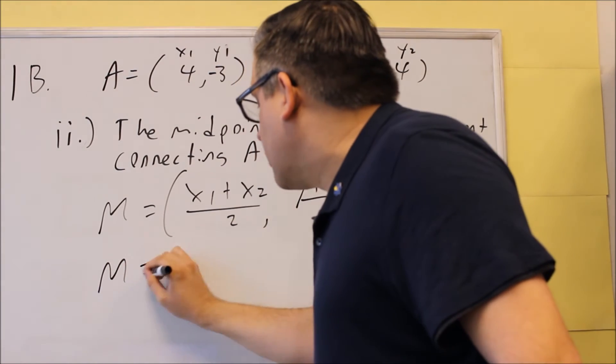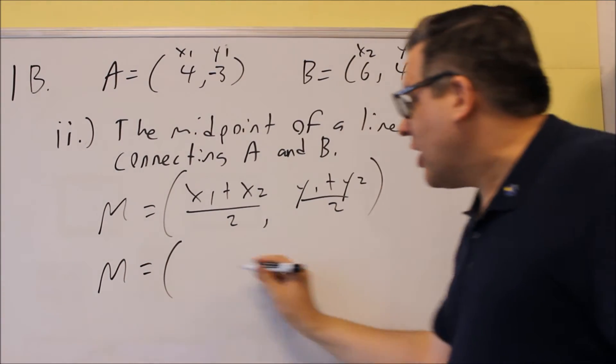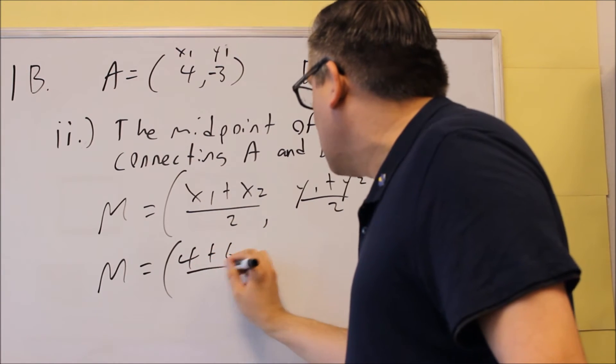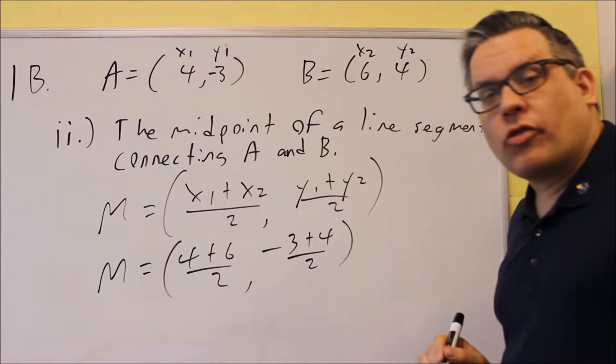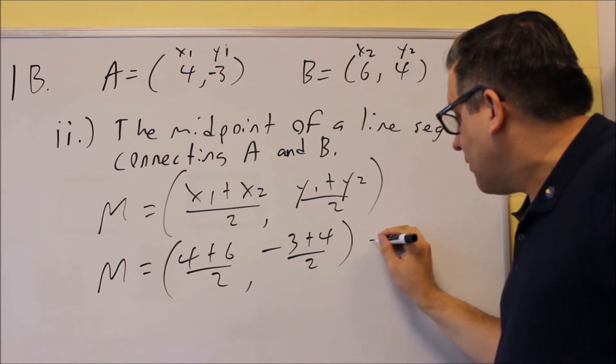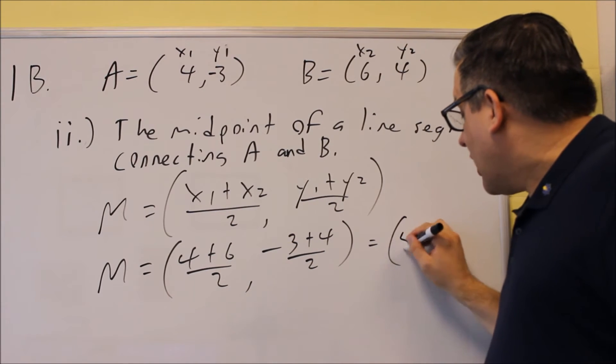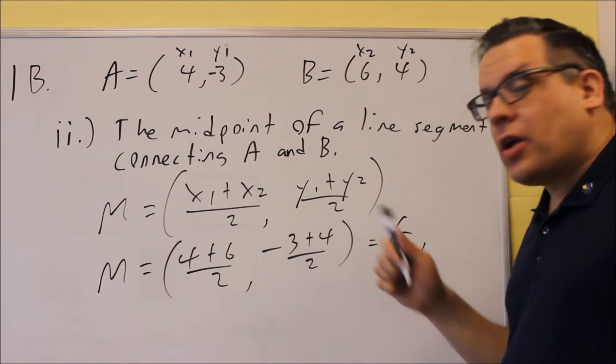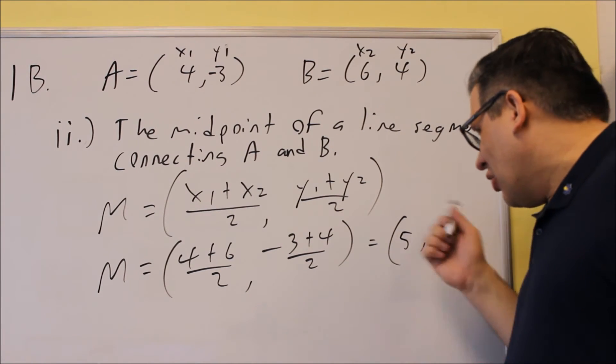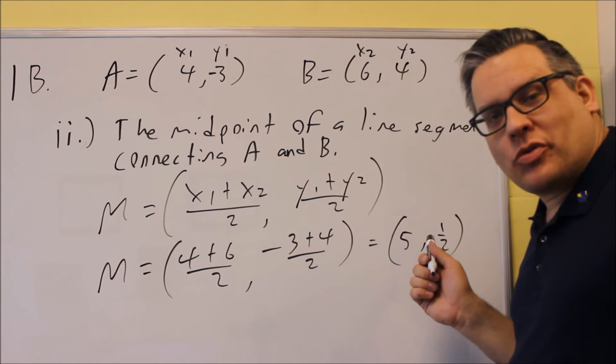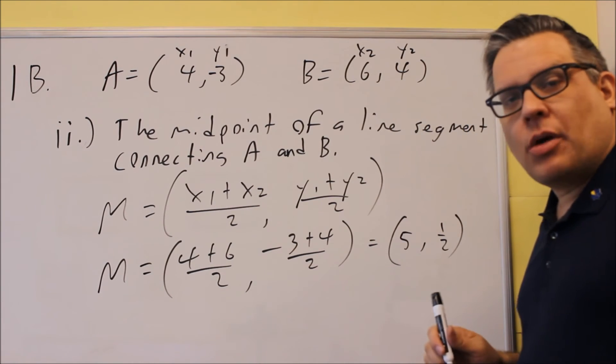And you get a coordinate for our answer. So for the first one, we're going to go ahead and put in the two x values. So we have 4 plus 6 over 2, and negative 3 plus 4 over 2. And we're going to simplify. So we get a 10 over 2, which is 5, and 4 minus 3 is 1, so we get a 1 half for the second part. So coincidentally, the y values are both the same on each. It's not always going to happen that way. It just depends on the numbers that we have.